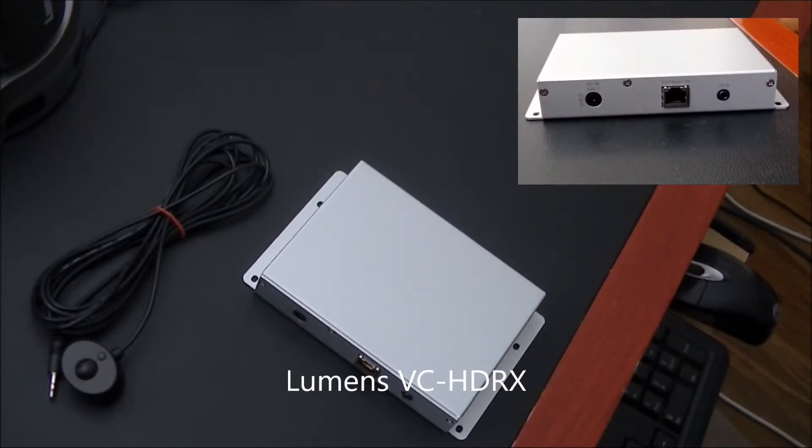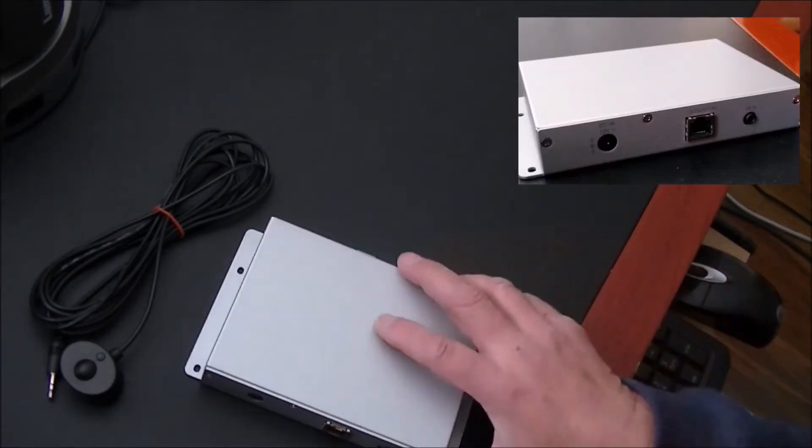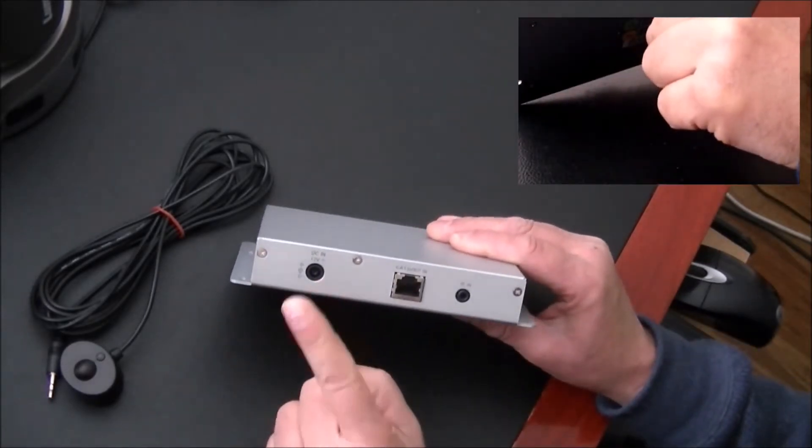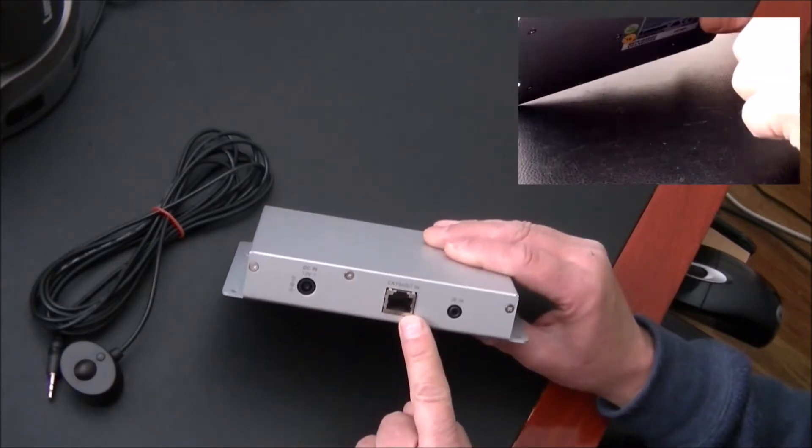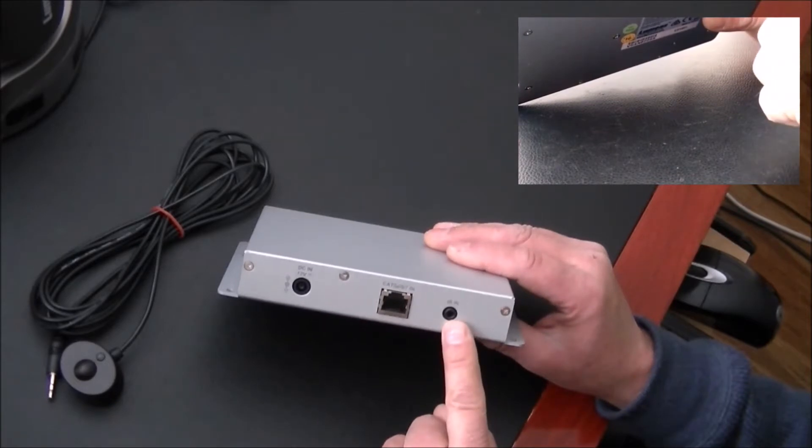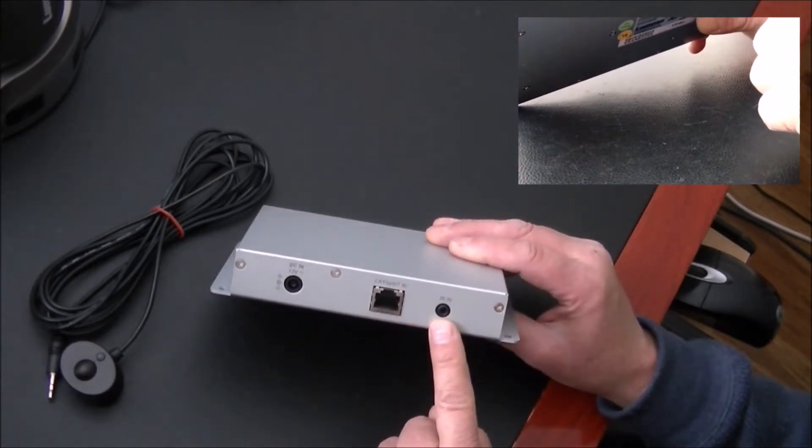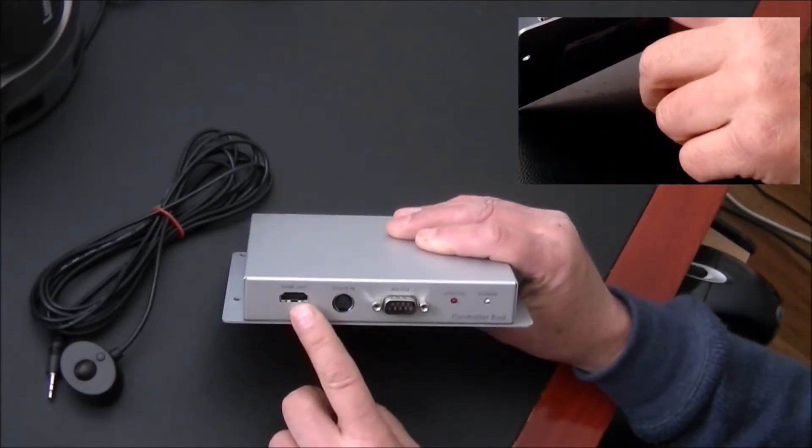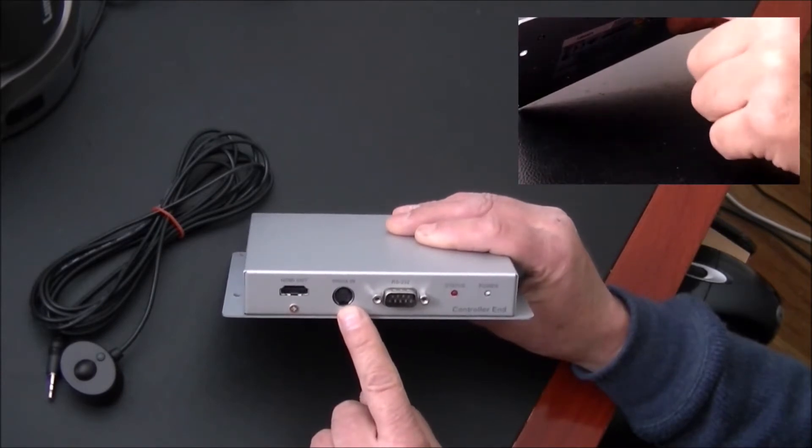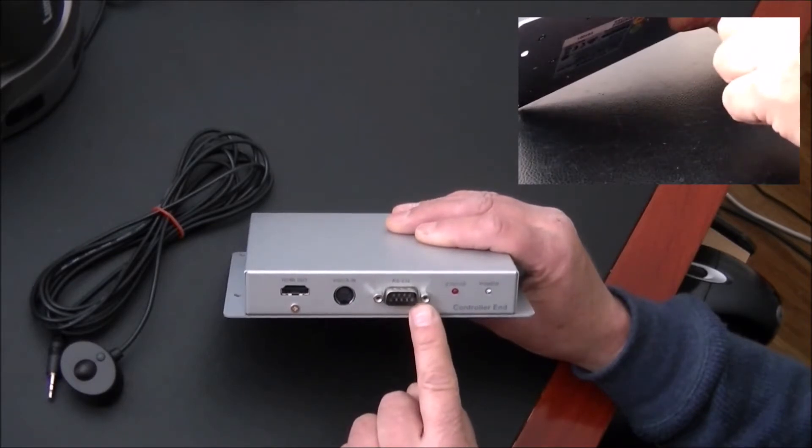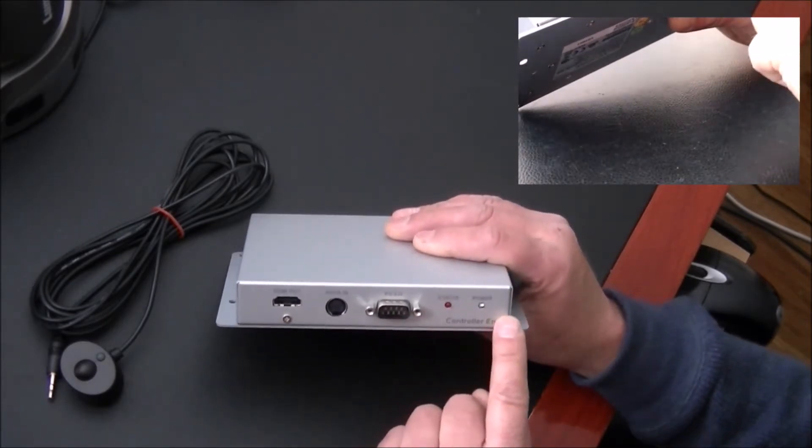We are now going to introduce the VC-HDRX receiver. We have for this terminal we got the DC in which is the power for the camera, the connection for the HD BaseT, the infrared receiver to send the remote control signal. We have the HDMI out for our capture card, controller and the connector for the VISCA controller or the RS-232 controller plus the status light and the power line.